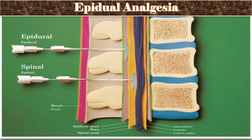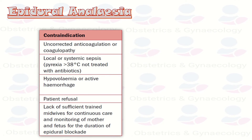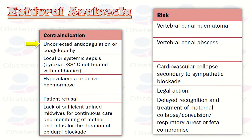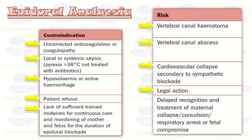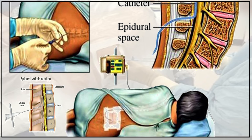Additional contraindications of epidural analgesia include uncorrected coagulopathy or anticoagulation, local or systemic sepsis not treated with antibiotics, hypovolemia or active hemorrhage, patient refusal, and lack of sufficient trained midwives for continuous monitoring of mother and fetus. Risks include vertebral canal hematoma, vertebral canal abscess, cardiovascular collapse secondary to sympathetic blockade, risk of legal action, delayed recognition of maternal collapse, convulsion, respiratory arrest, and fetal compromise. Epidural analgesia also lengthens the second stage of labor.